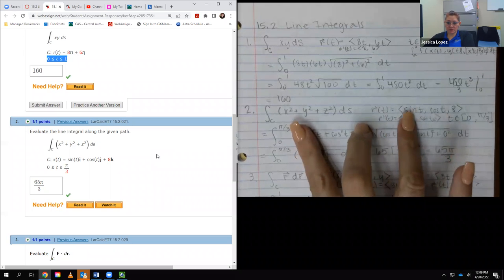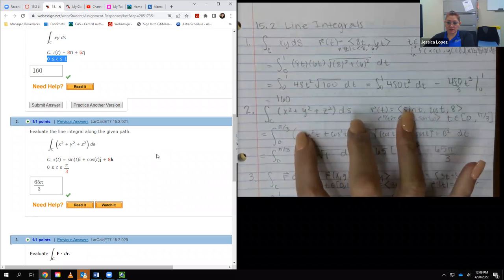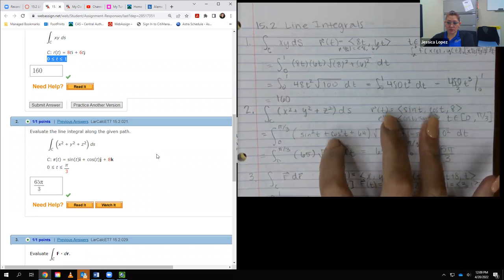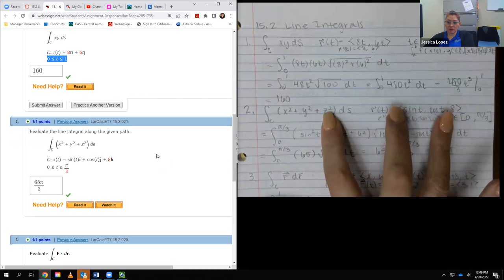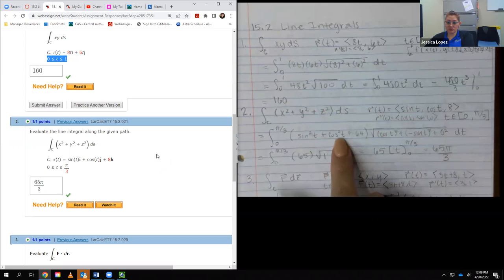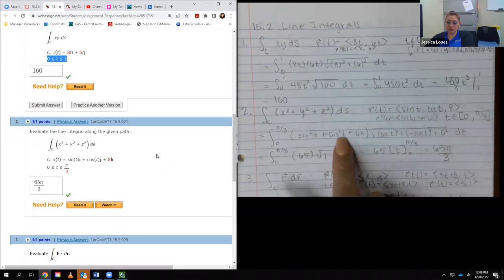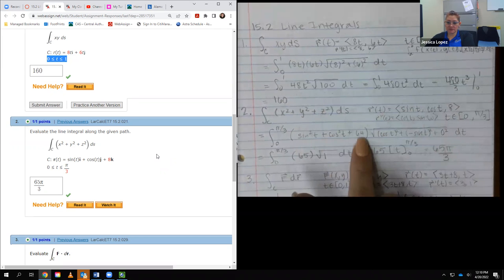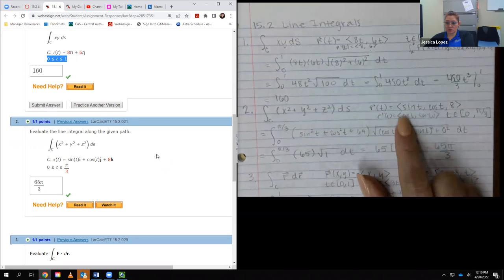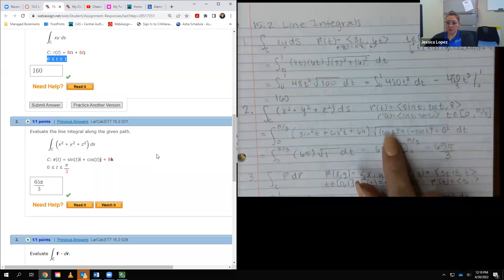And so then I plugged in the first component is x, so that went in there, so I got sine squared. Cosine went in for y, so I got cosine squared. And then 8 went in for z, so I got 8 squared, which is 64. Now, this is all just 1. Sine squared plus cosine squared is 1. So 1 plus 64 is where this 65 came from. And when I square this component, square this component, and square the 0, I end up with cosine squared plus a positive sine squared, which is again another 1.